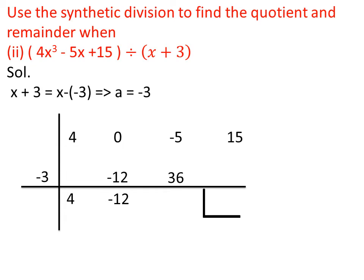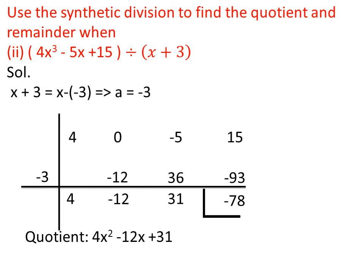Adding 0 and -12 gives -12. The product of -12 and -3 is 36; writing 36 under -5 and adding gives 31. The product of 31 and -3 is -93; writing -93 under 15 and adding gives -78. Since -78 is the last number, it is the remainder. The remaining terms give the quotient: 4x² - 12x + 31. So the quotient is 4x² - 12x + 31 and the remainder is -78.